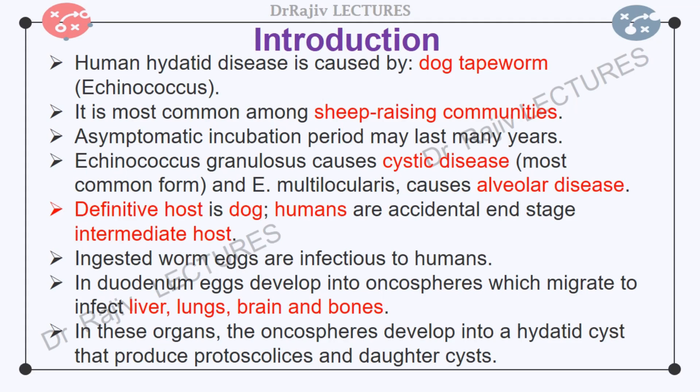In these organs, the oncospheres develop into a hydatid cyst that enlarges gradually, producing protoscolices and daughter cysts. The cyst has three layers: an outer pericyst of compressed host organ tissues, an intermediate ectocyst which is non-infective, and an inner endocyst. The endocyst forms the germinal membrane and contains viable parasites which separate to form daughter cysts. Daughter cysts and brood capsules arise from the germinal layer. New larvae called protoscolices develop within the brood capsule. The definitive host becomes infected by ingesting the cyst-containing organs of the infected intermediate host.